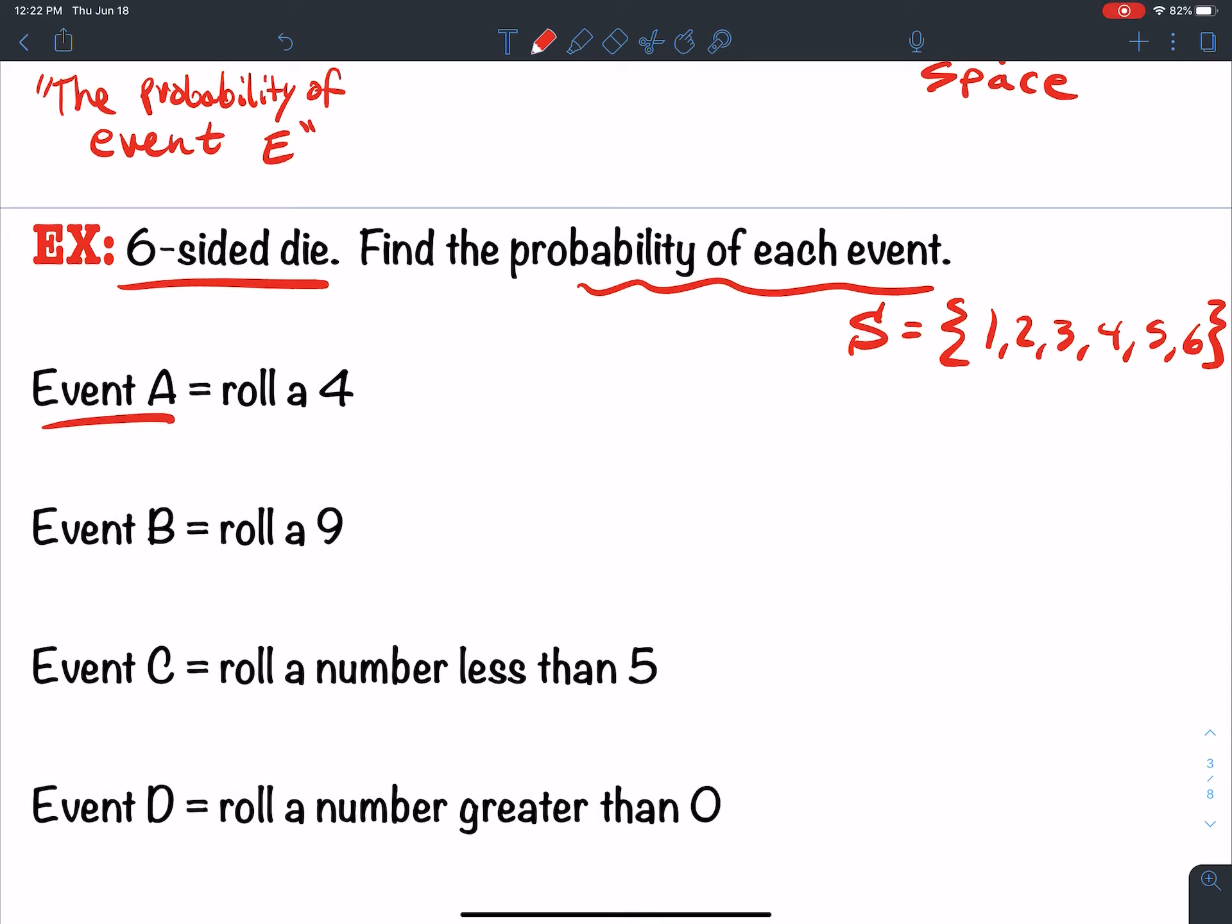So the probability of event A, that's P of A, is equal to, well, what is event A? That's we roll a four. How many ways can I roll a four? There's only one four. There's one way to roll a four. How many ways total can I roll a die? Six total. So the probability is one out of six, which if you want it in decimal form is like .167 approximately.